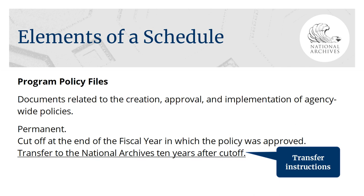Some record schedules will include transfer instructions. In this example we have permanent records — their historical value means they'll ultimately be transferred to the National Archives and retained forever. A record schedule for program policy files describes the records as documents related to the creation, approval, and implementation of agency-wide policies. The retention is listed as permanent: cut off at the end of the fiscal year in which the policy was approved, then transfer to the National Archives 10 years after cut off.